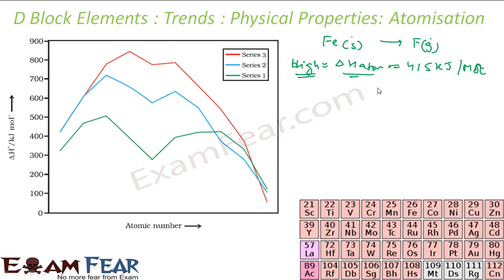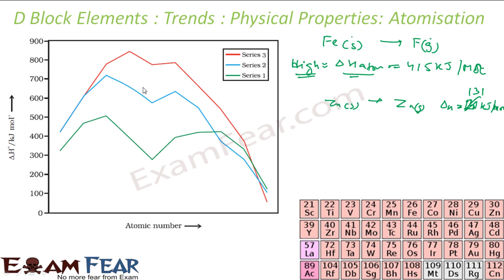A high ΔH atomization suggests these transition metals are held together by a strong metallic bond. Zinc has a lower ΔH atomization — only about 131 kJ/mol — because its d orbitals are filled and don't contribute to bonding. The same trend as melting point applies: the maximum occurs at the center of the series, and minima are at the extremes, because everything depends on the metallic bond and the number of unpaired electrons.